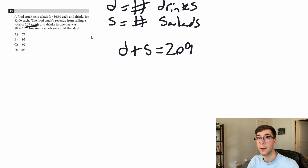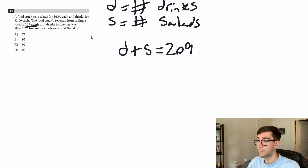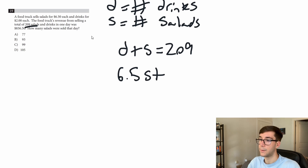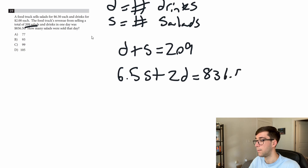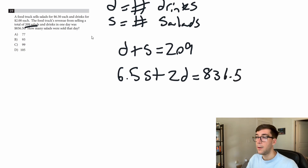Now the second equation is about price. Salads are $6.50 each, so that's 6.5s. Drinks are $2 each, so plus 2d. The total price was $836.50, giving us 6.5s plus 2d equals 836.5. Now we have our two equations and we can start solving them. With word problems the hardest part is usually just writing the equations.